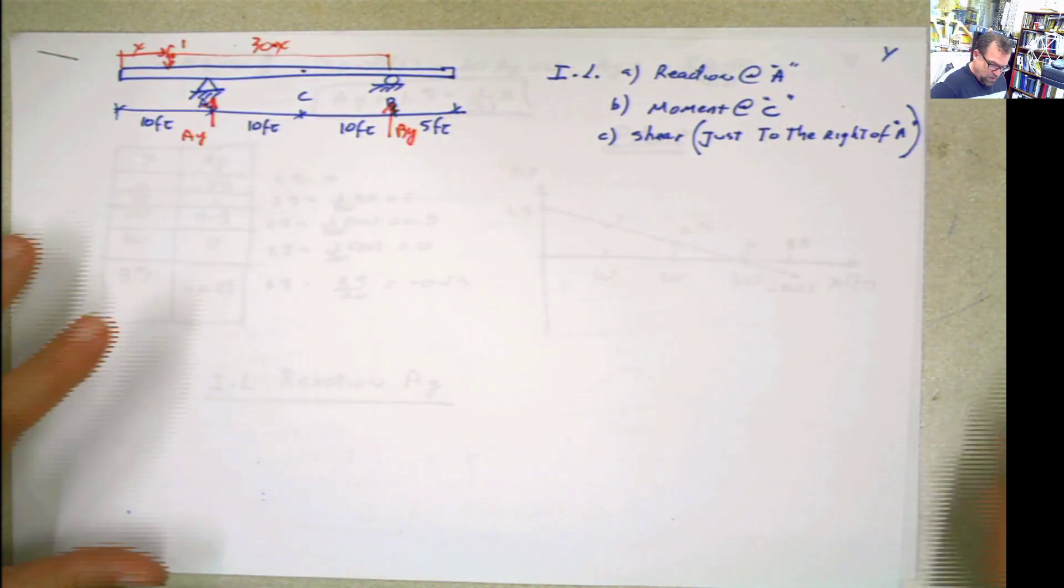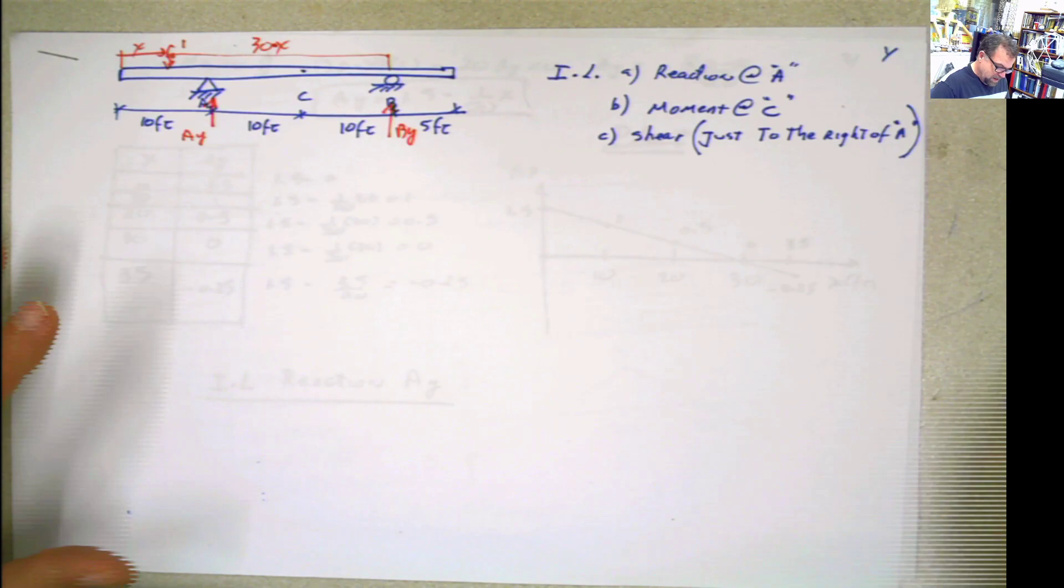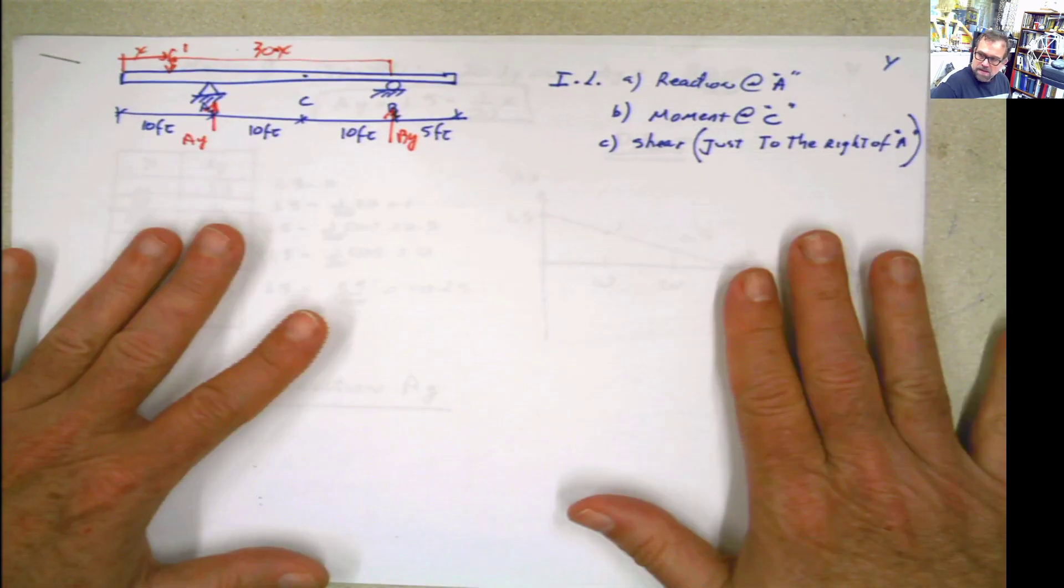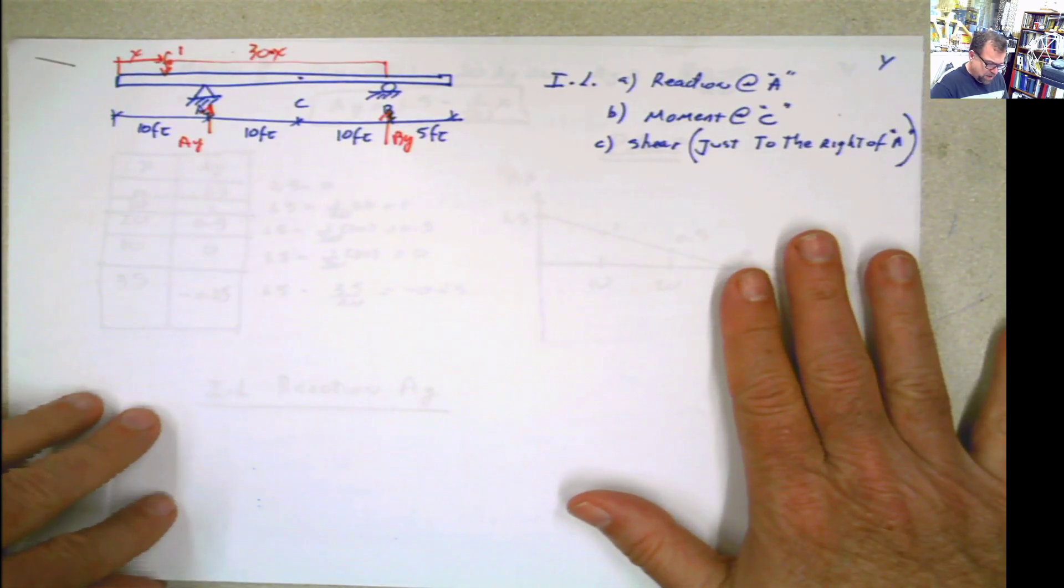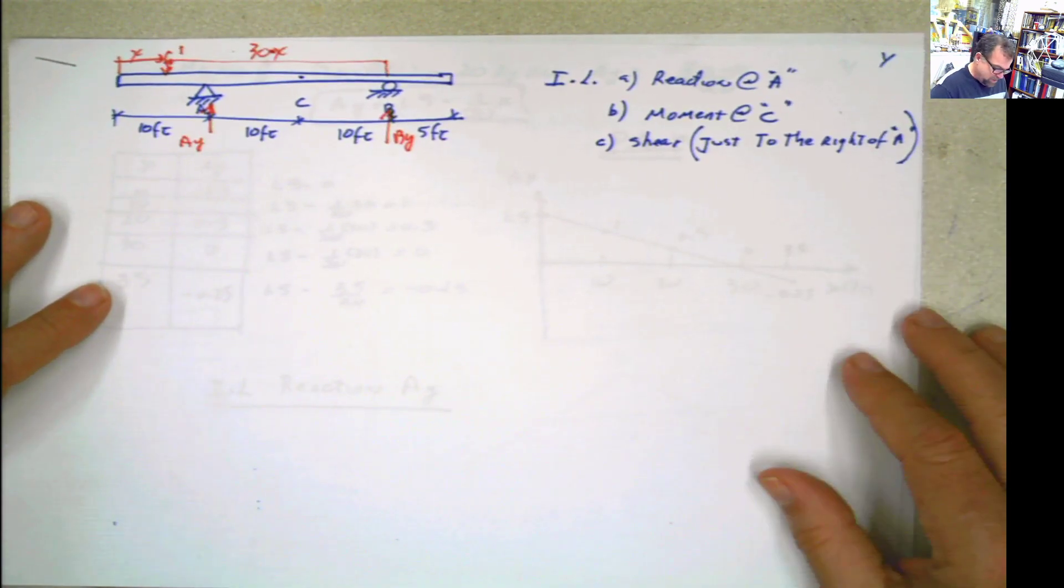Hello guys. More Muller-Breslau, more qualitative influence lines. So in the past, some of my other examples that we did, or that I did, and hopefully you watch and learn from them.